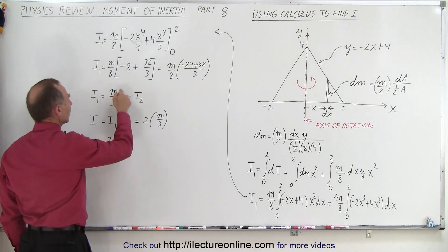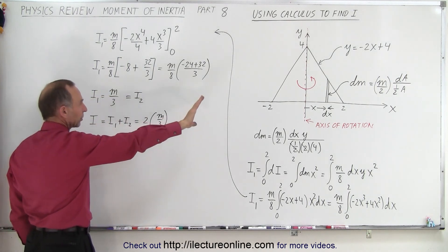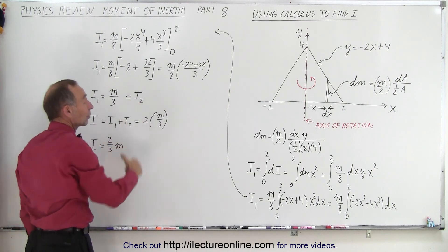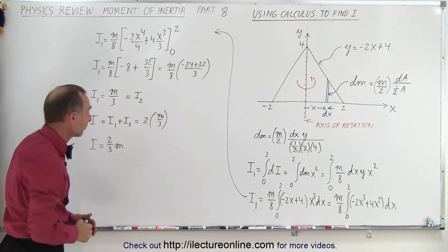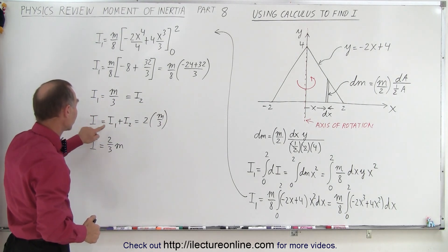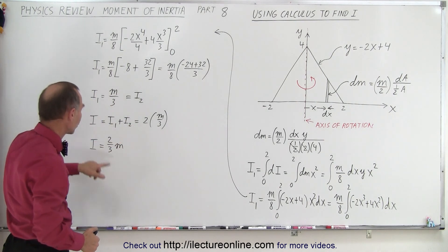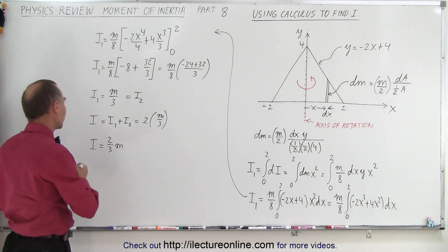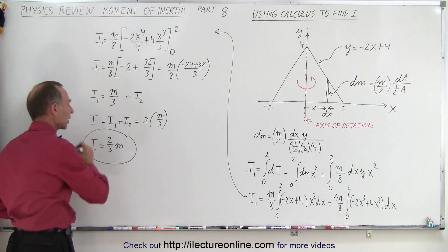And then we get the moment of inertia of just the one half of the triangle, the right half. And of course that must equal the moment of inertia of the left half. So then the total moment of inertia is the sum of the 2, which is twice m over 3, or 2m over 3, and that would then be the moment of inertia of a triangle like that, using calculus.